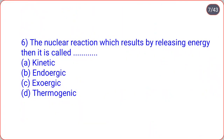The next: the nuclear reaction which results by releasing energy, then it is called dot-dot. Options are kinetic, endoergic, exoergic, thermogenic. Correct option is option C, exoergic. The nuclear reaction which results by releasing energy is called exoergic, and the nuclear reaction which results by absorbing energy is called endoergic.